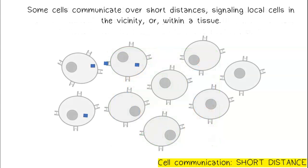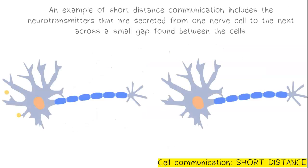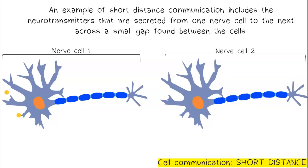Some cells communicate over short distances, signaling local cells in the vicinity or within a tissue. An example of short distance communication includes the neurotransmitters that are secreted from one nerve cell to the next across a small gap found between the cells.